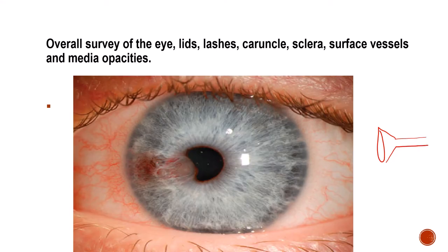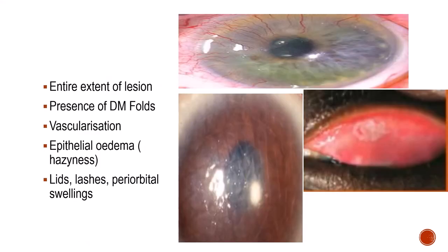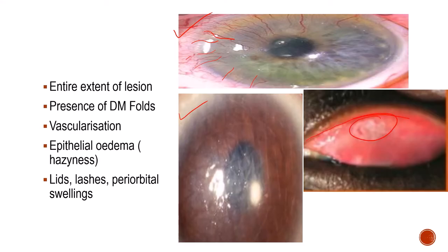In this picture you can see an iris cyst along with vascularization — this is an example of diffuse illumination. In diffuse illumination you can see lesions, measure the total extent of a lesion, observe DM folds along with corneal edema, and see vascularization with vessels growing from the limbus onto the corneal surface. Corneal haziness, lesions in the lids, blepharitis, periorbital swelling, chalazions, and hordeolums can all be observed on diffuse illumination.